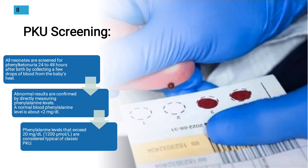Screening: all newborns are screened for phenylketonuria 24 to 48 hours after birth by collecting a few drops of blood from the baby's heel. Abnormal results are confirmed by directly measuring phenylalanine levels. A normal blood phenylalanine level is about less than 2 mg per deciliter. Phenylalanine levels that exceed 20 mg per deciliter are considered typical of classic PKU.